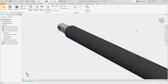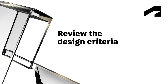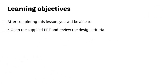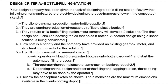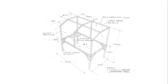Close the assembly and do not save. After completing this lesson, you'll be able to open the supplied PDF and review the design criteria. I have opened the PDF and there are six statements: we are going to be designing a 16-bottle filling station with circular indexing tables. Low-cost is a priority and the filling process will be semi-automated. Our next step is to review the sketch showing the dimensions of the frame — material is stainless steel. We will be using these dimensions in the next lesson, which is creating the base frame skeleton.